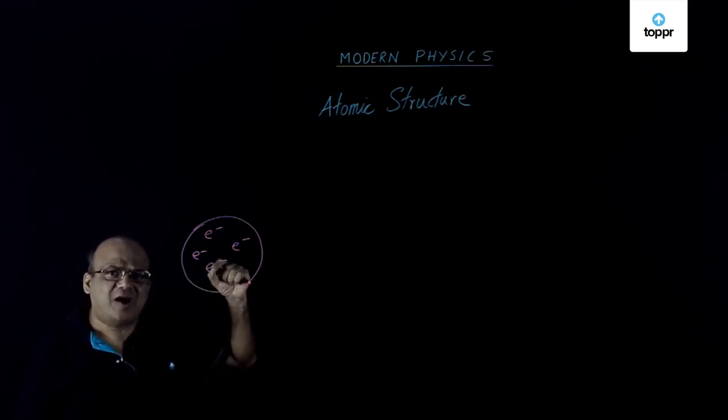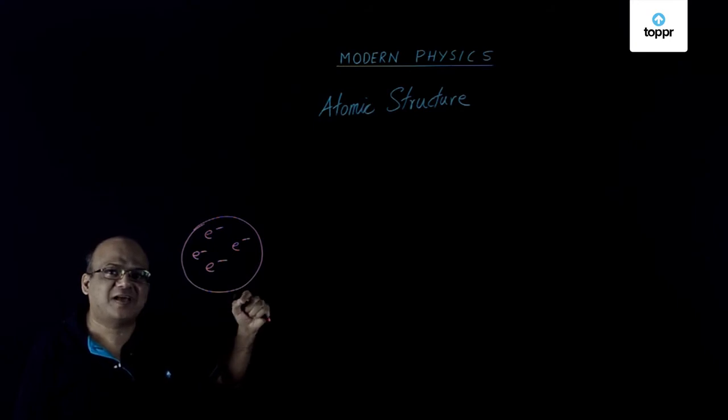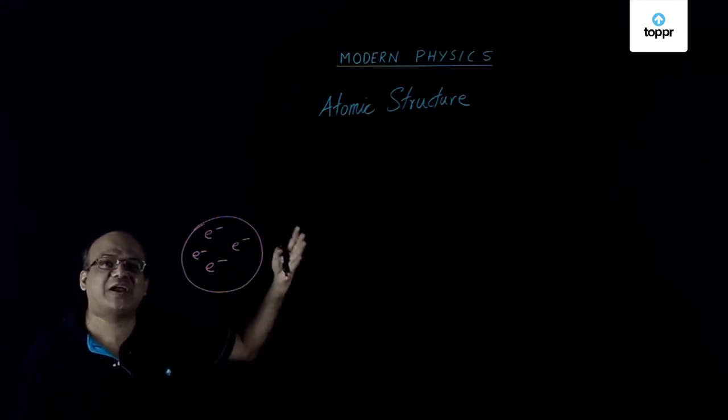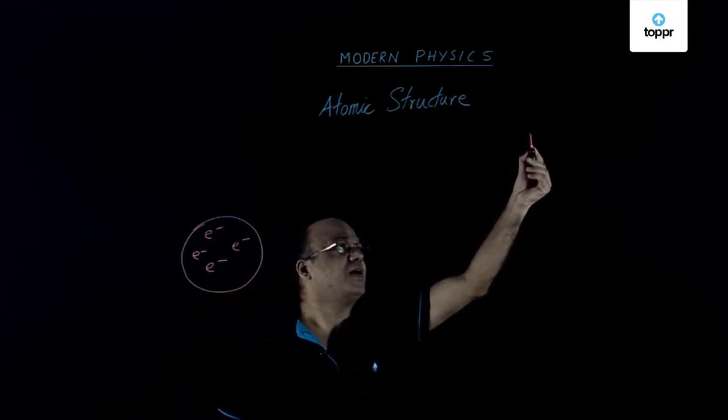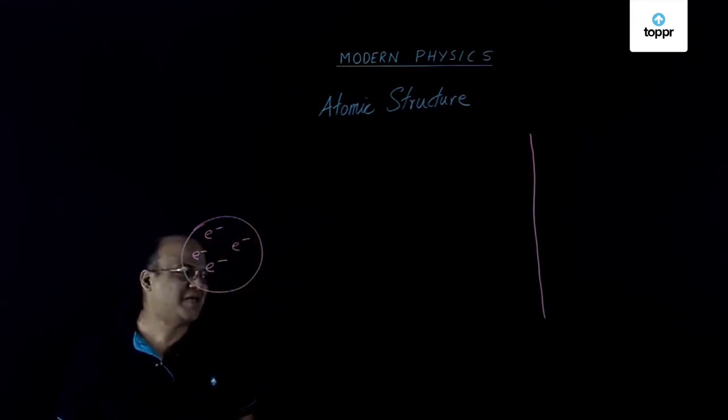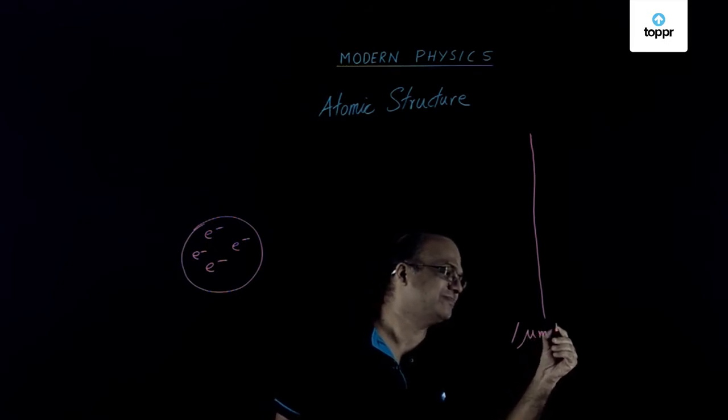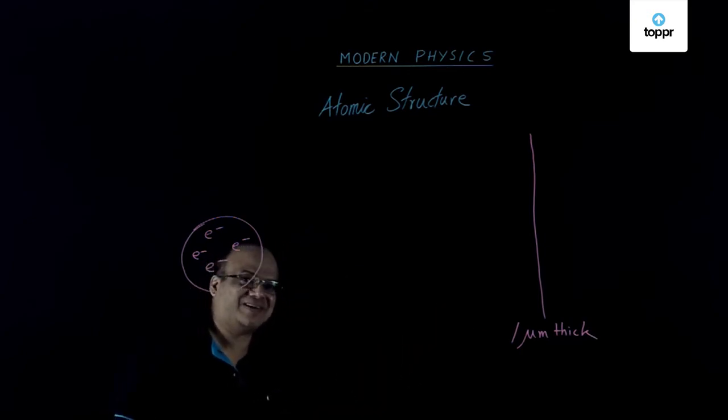Then a famous experiment was done by Geiger and Marsden under the advice of Rutherford. That gold foil experiment. They took a very thin gold foil, one micrometer thick. We should not be saying thick because that is actually thin, but we say one micrometer thick.